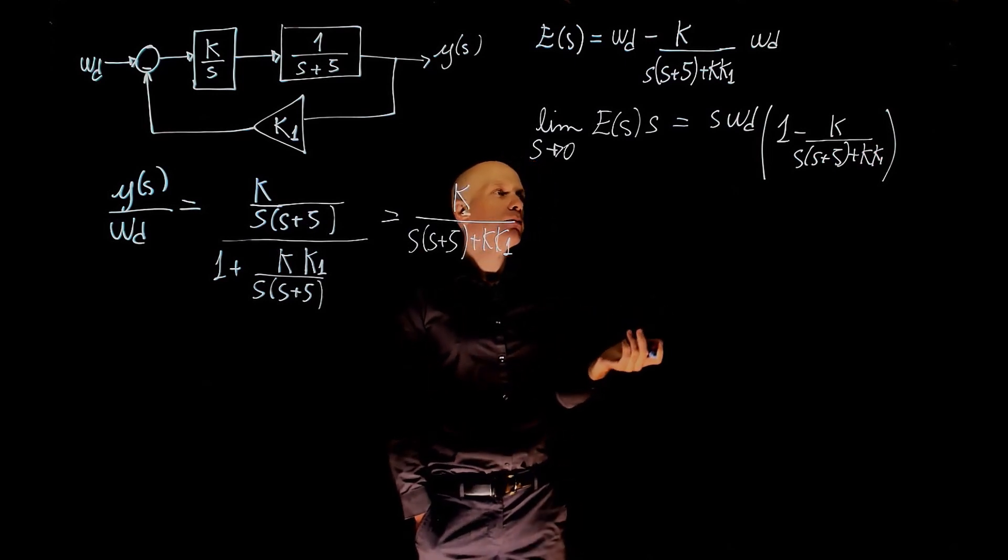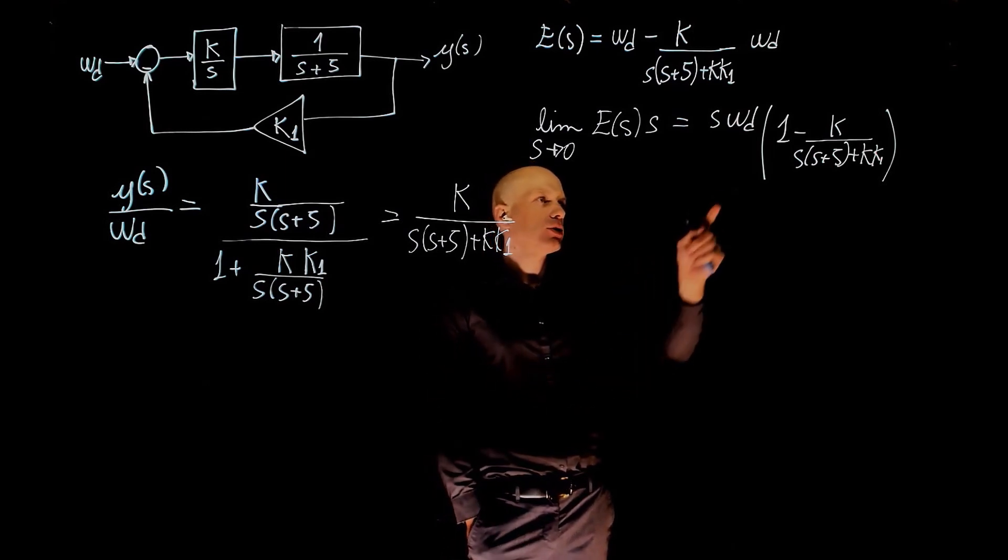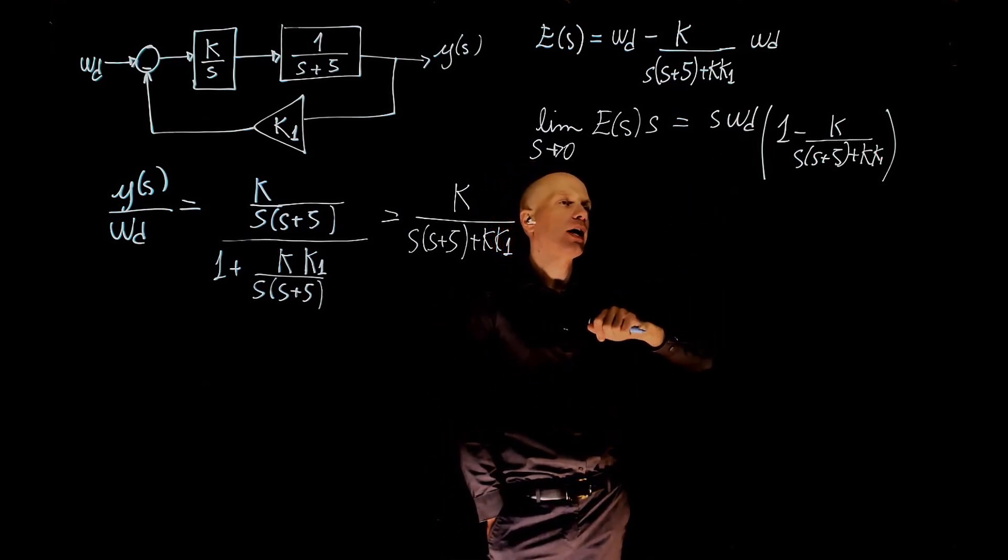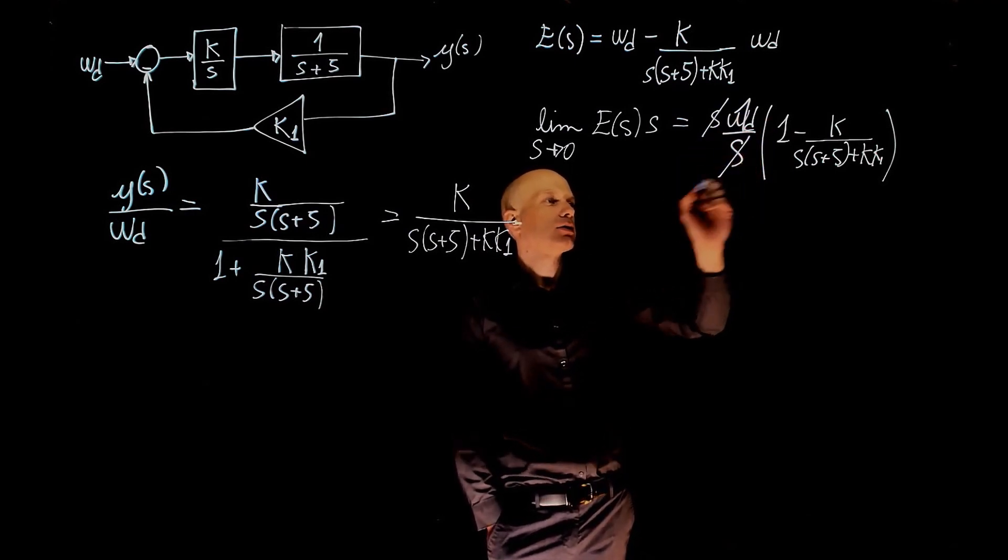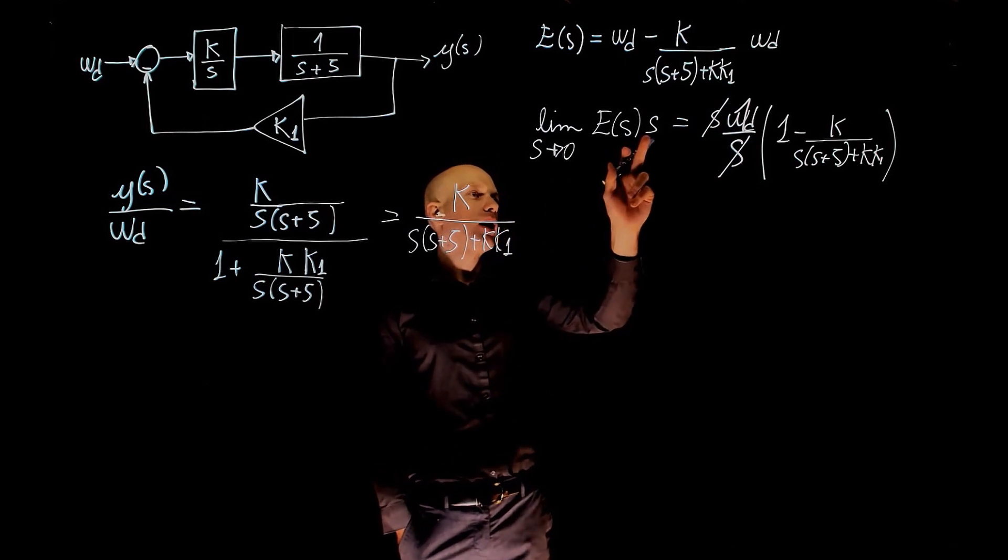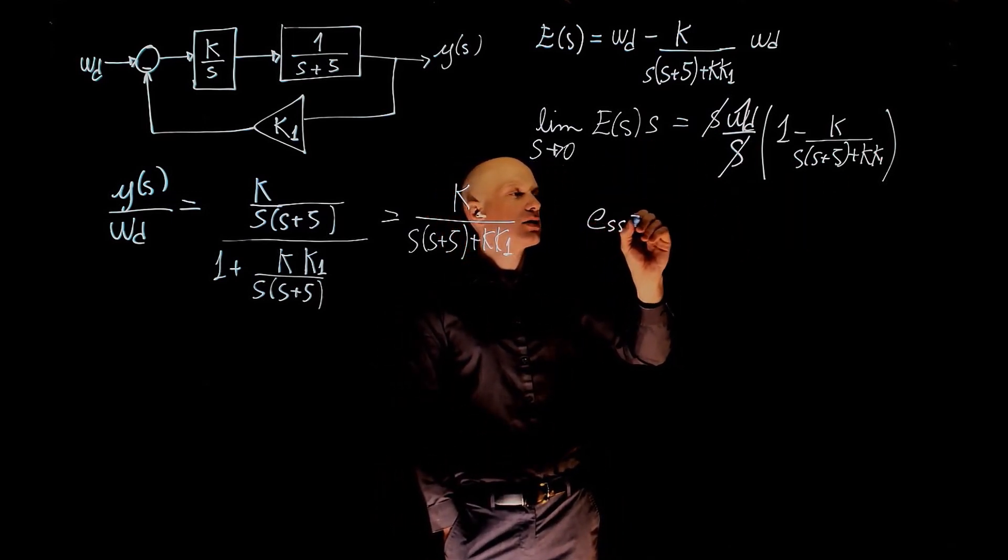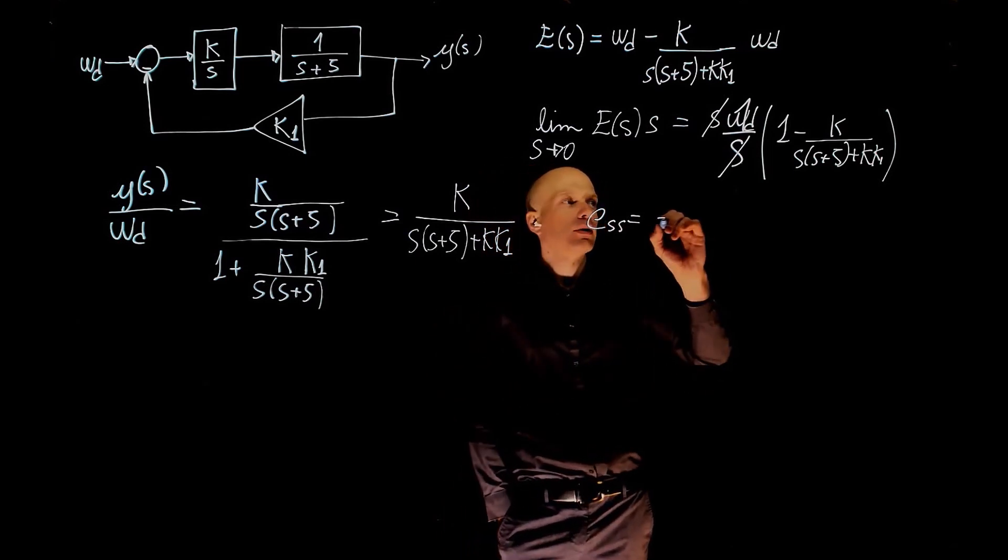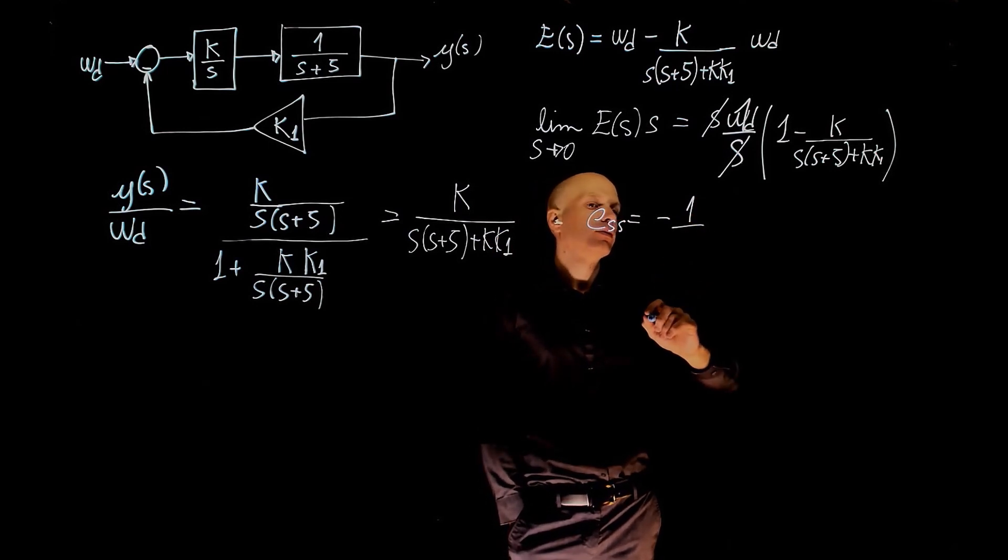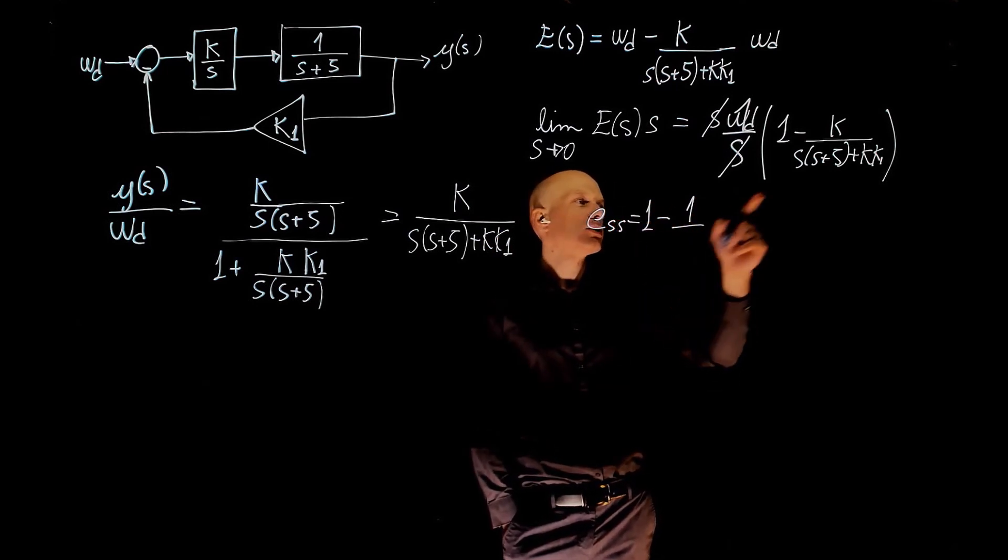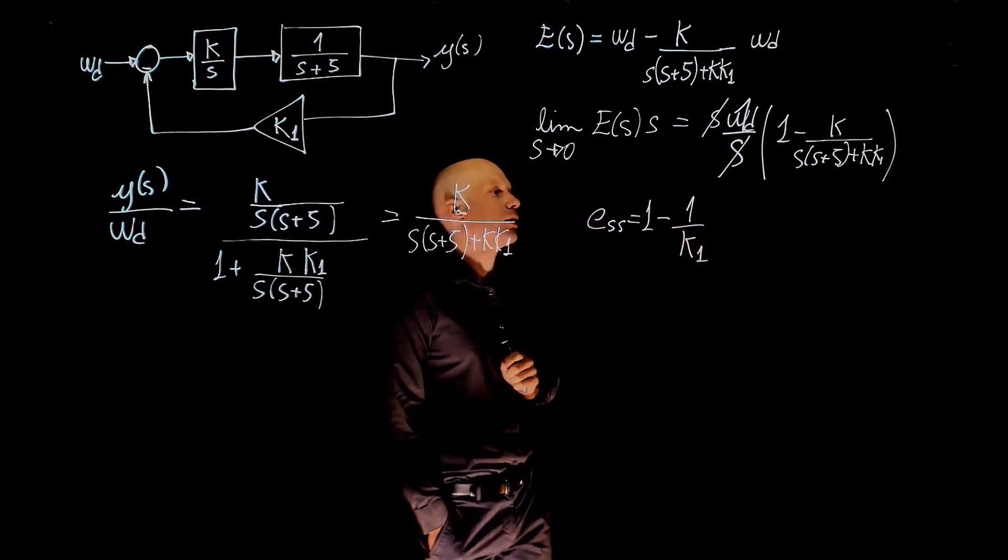Now we need to define the input. Let's assume that our input here is a step function. So if it's a step function, then wd becomes 1 over s. So if this becomes 1 over s, this s cancels with this s. And when s tends to 0, we are left with a steady-state error of 1 minus 1 over k1.